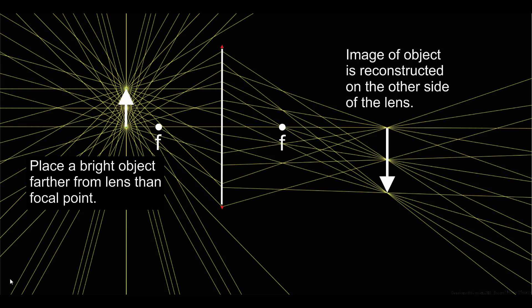If the object were placed closer to the lens than the focal point, something different happens. What happens is similar to what happens with a diverging lens. So instead of talking about that situation, I will move on to the diverging lens.